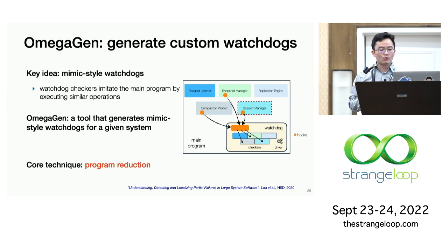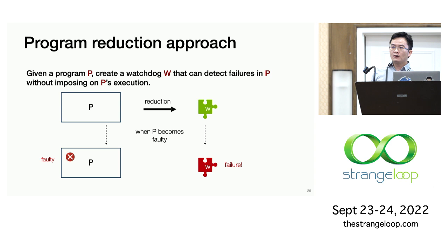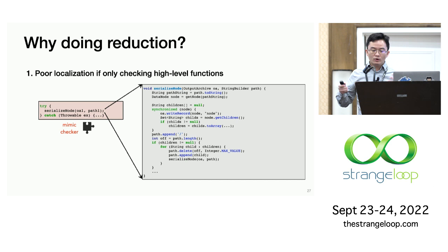OmegaGen analyzes the source code of a given program, then generates customized watchdogs and instruments and packages the watchdog back into the original program. The core technique used behind the tool is program reduction. The goal of this technique is to create a reduced version of a given program P in a way that still allows this reduced version to expose issues that P may have, but without imposing on P's execution.